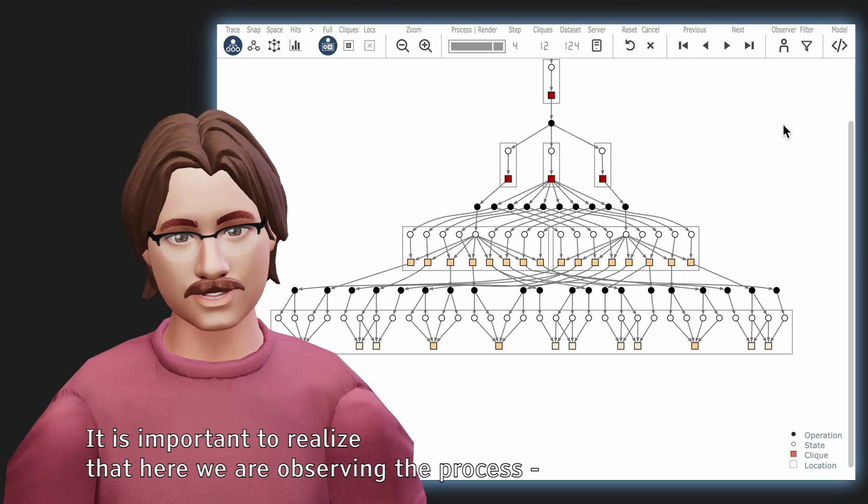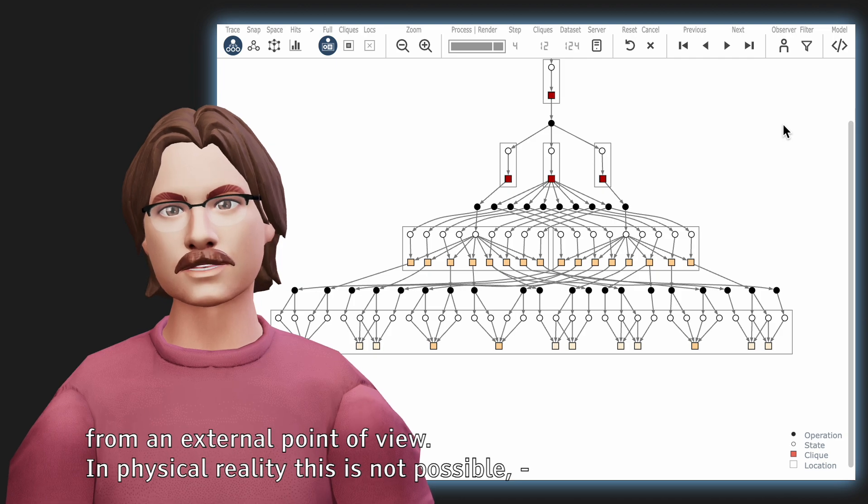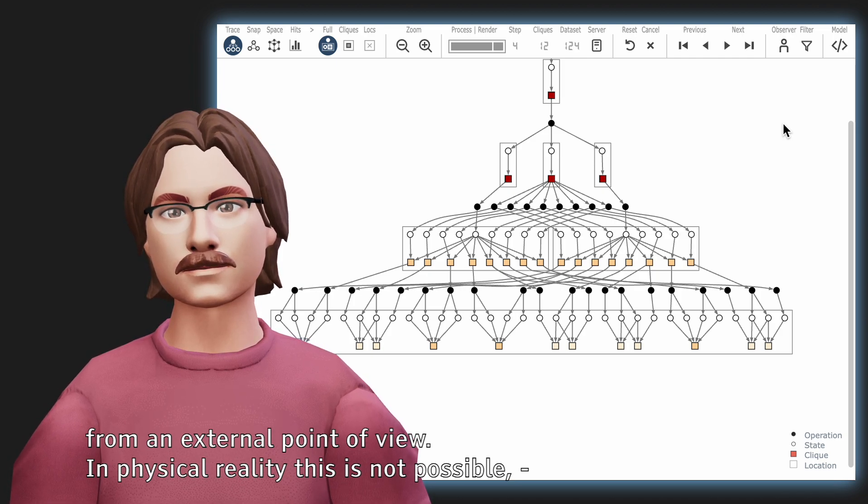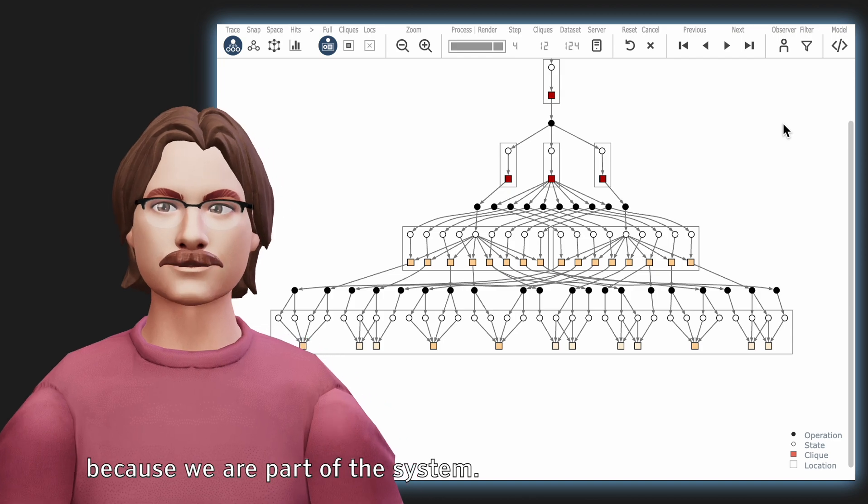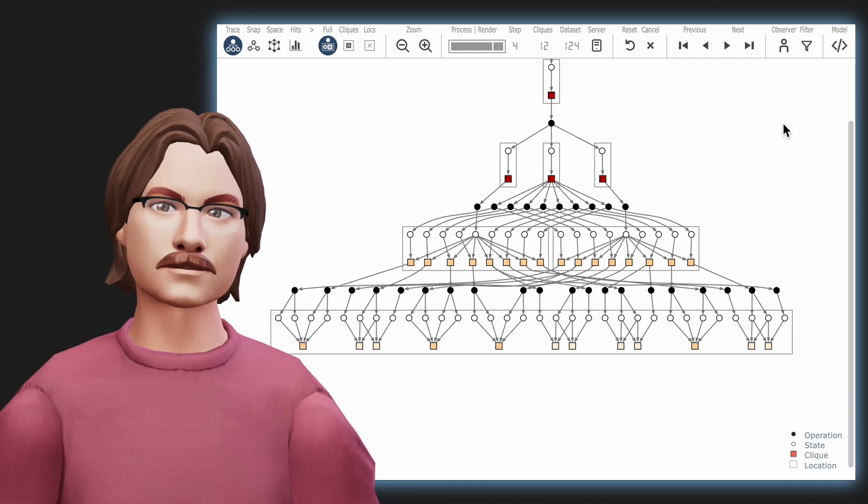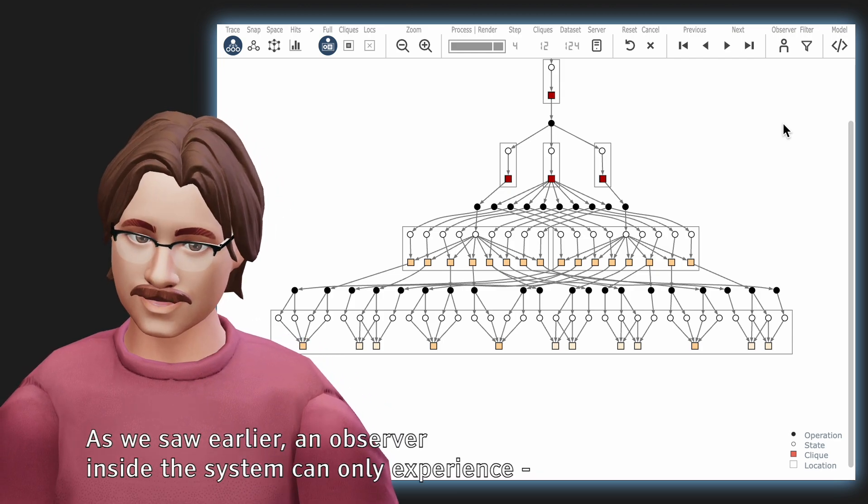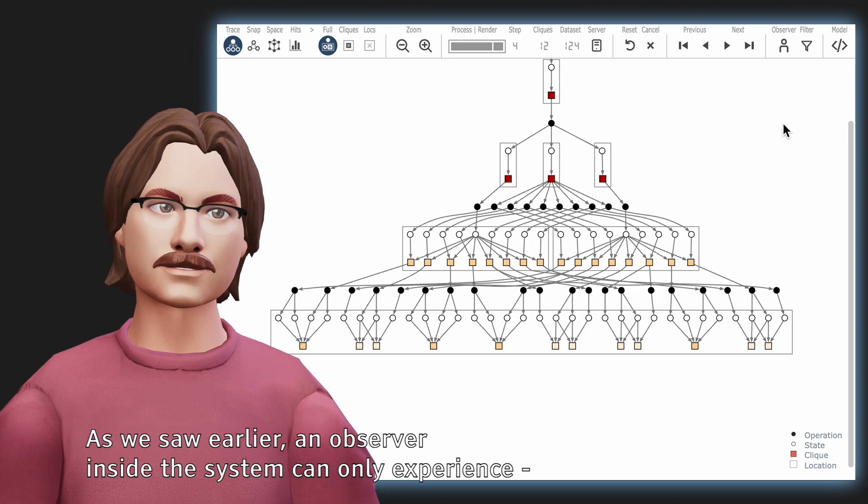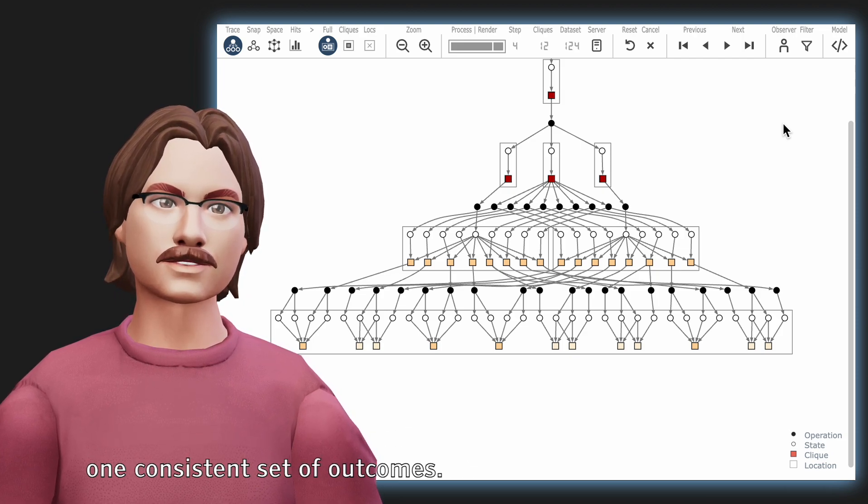It is important to realize that here we are observing the process from an external point of view. In physical reality this is not possible, because we are part of the system. As we saw earlier, an observer inside the system can only experience one consistent set of outcomes.